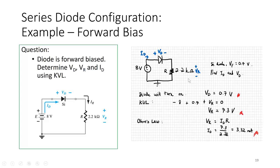In this situation we want to find ID and VD. The first thing we need to do is decide if the diode will turn on or not. Because it is in forward bias and this voltage is enough to overcome 0.7 volts — the voltage source is 8 volts — the diode will turn on and VD is 0.7 volts.